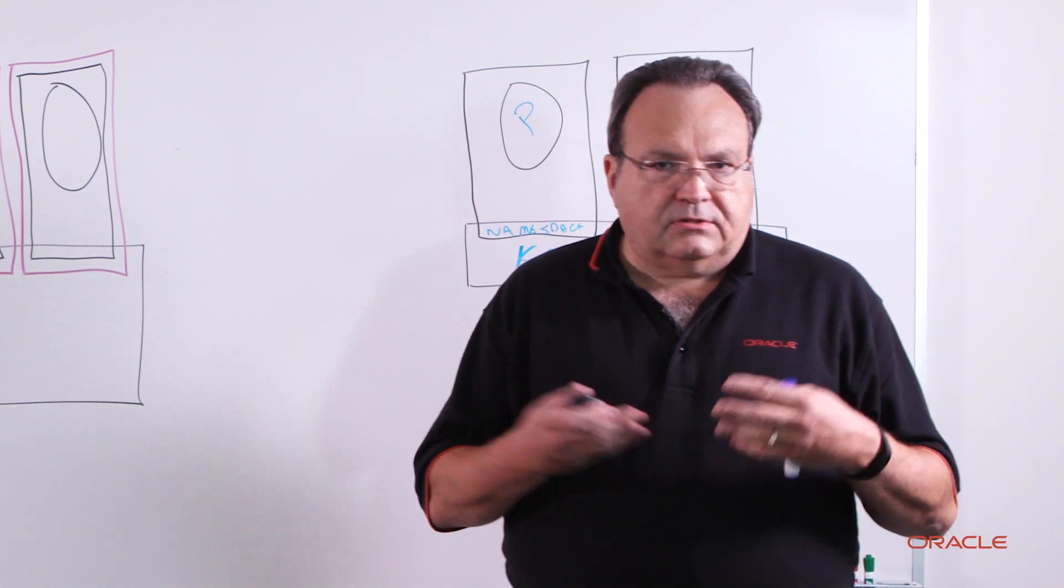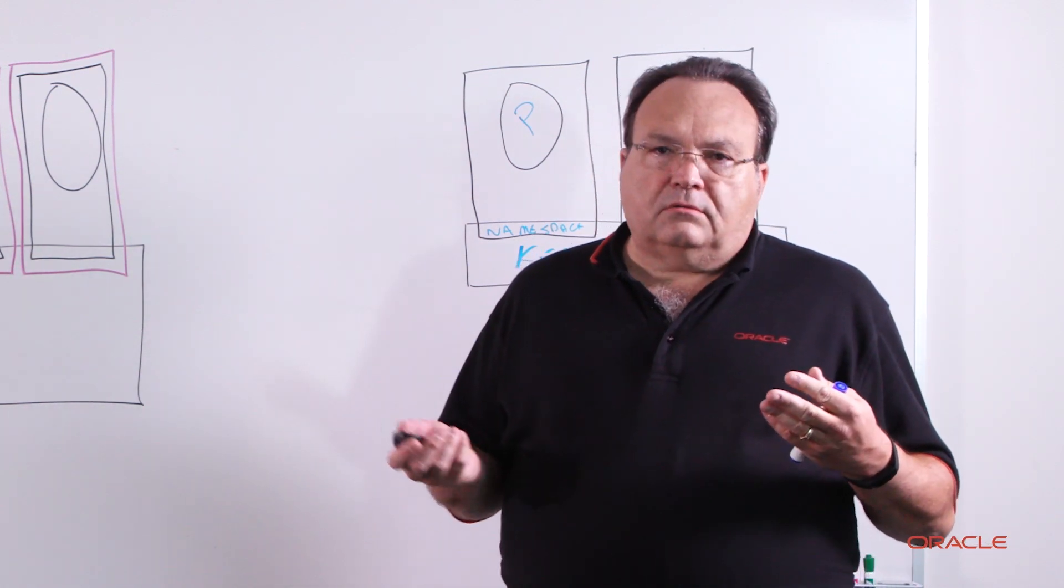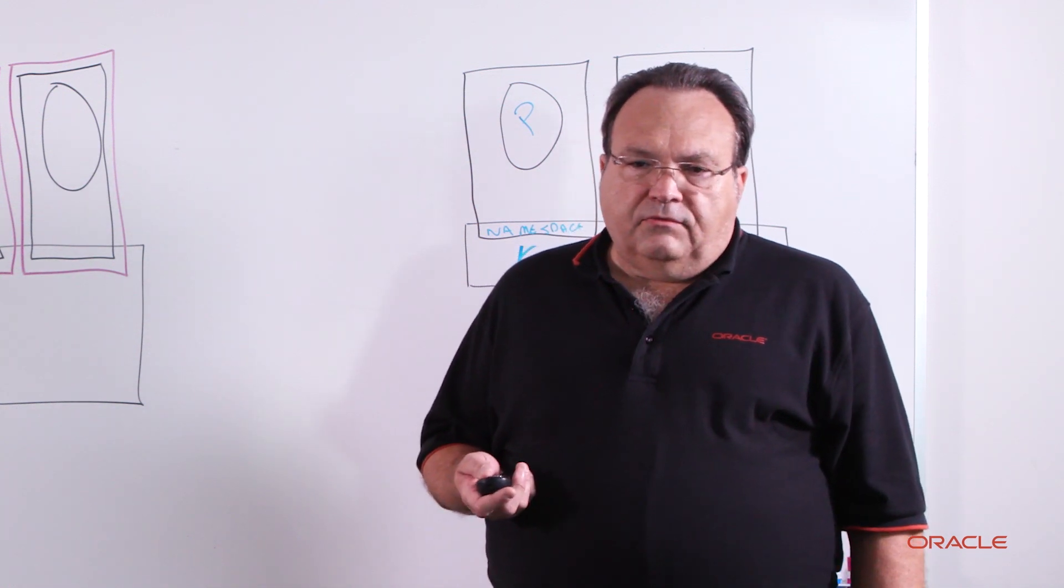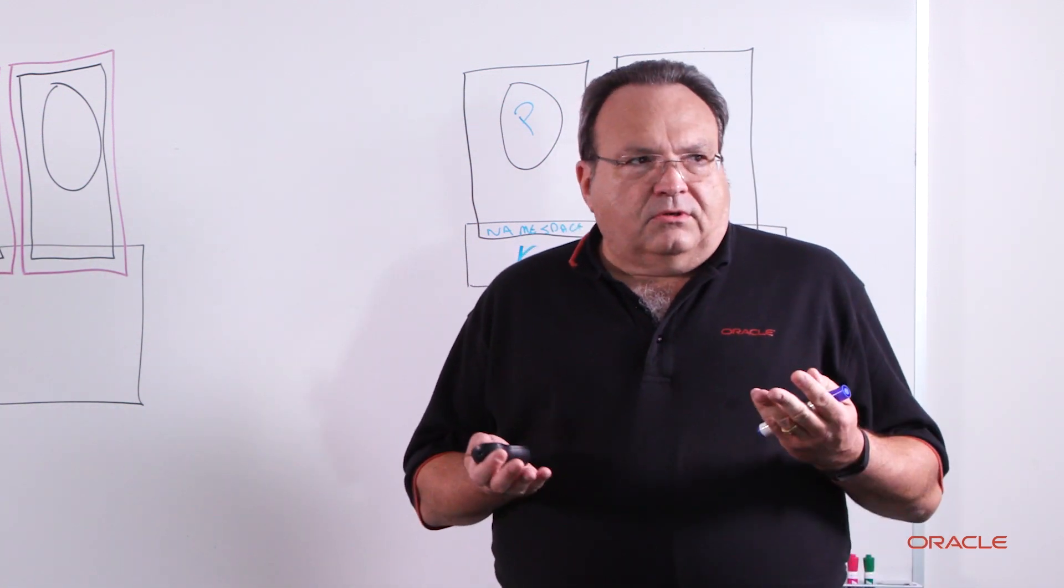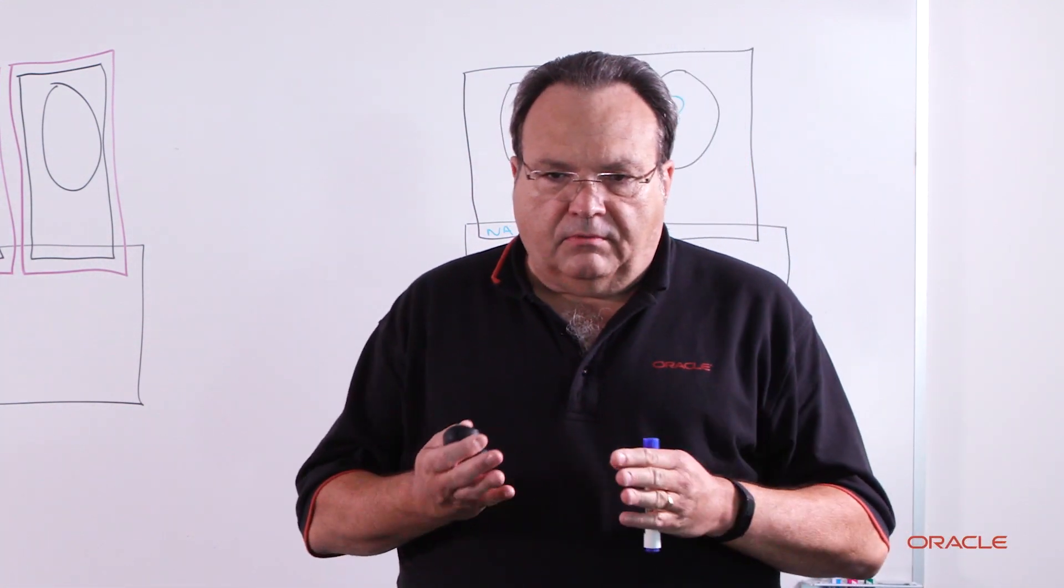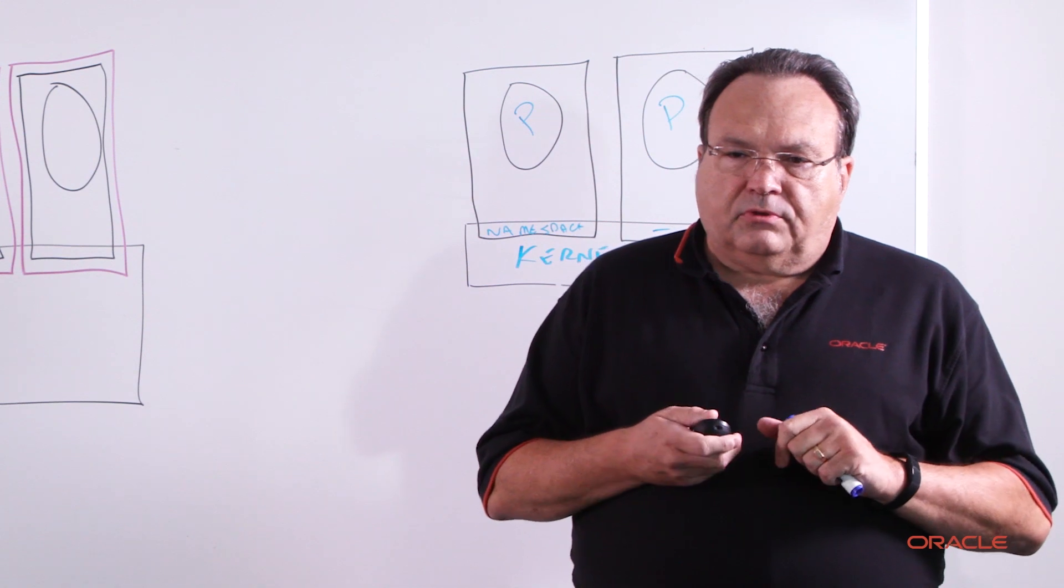One container gets root access, you could have them all affected. Rootless containers are around, but they can be very tricky to set up and configure. Containers are like cattle. We number them. We don't name them. They're very short-lived and very disposable.